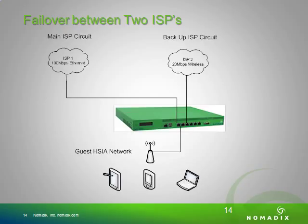If we are utilizing failover between two different ISPs, in this example we have a main ISP circuit of 100 megabit Ethernet and a backup circuit of 20 megabit wireless. All guest traffic would run over the main ISP circuit unless that link went down. Based on the interface monitoring or link status settings, if that link fails, all traffic would be moved over to ISP 2 and users should not lose any internet access. Once ISP 1 comes back up, users would move back over to that ISP, continuing to have internet access without interruption.